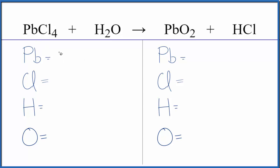We have one lead atom, four chlorine atoms, two hydrogens, and then just one oxygen atom. Product side, one lead, one chlorine, one hydrogen, and two oxygens.